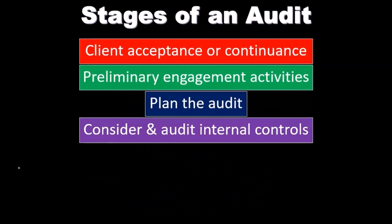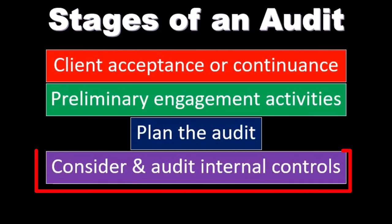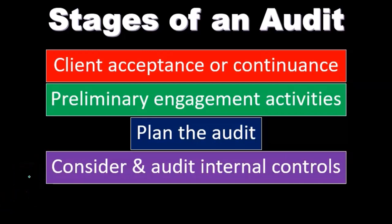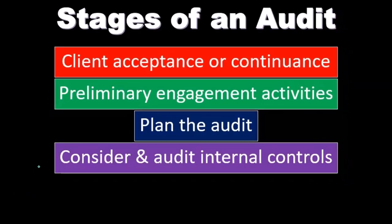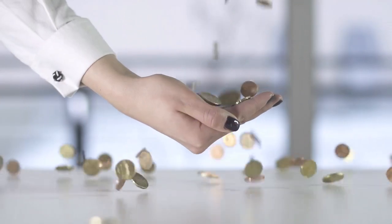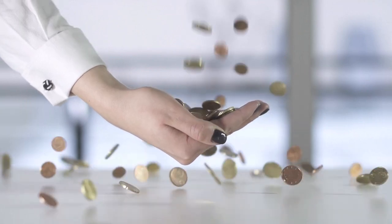The audit plan is a very important process and often one that's overlooked when we start to think about how to put the audit together. The plan helps us to be more efficient — it gives us a roadmap so we can be as efficient as possible as we actually conduct the audit. Then we want to consider and audit the internal controls. Once we have the plan, we're going to audit the internal controls before we jump in and look at those financial statements and start doing substantive tests.